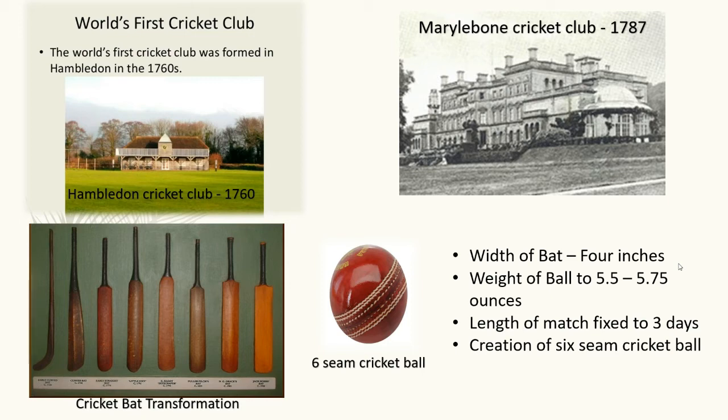The Marylebone Cricket Club, that is the MCC, was founded in 1787. There was also variation in bowling. Initially, players used to roll the ball and the batsman would hit it. Then variations started — spin and swing bowling developed. Due to these changes, the curved bat was replaced with a straight one. You can see the transformation of the cricket bat in the picture on the slide.